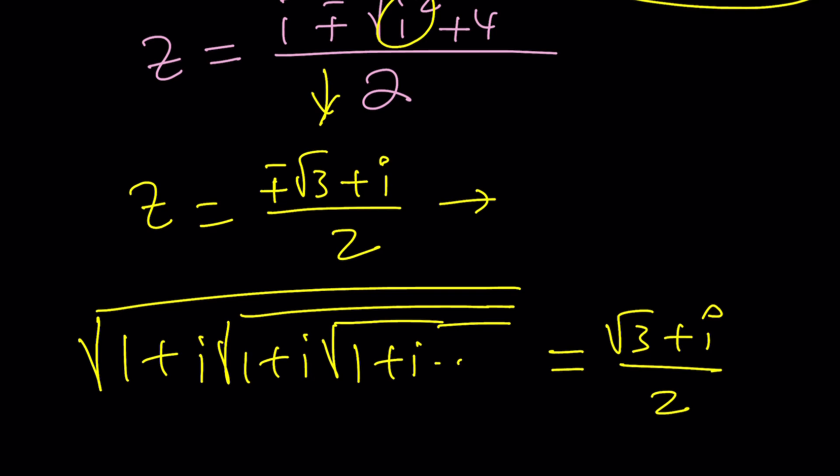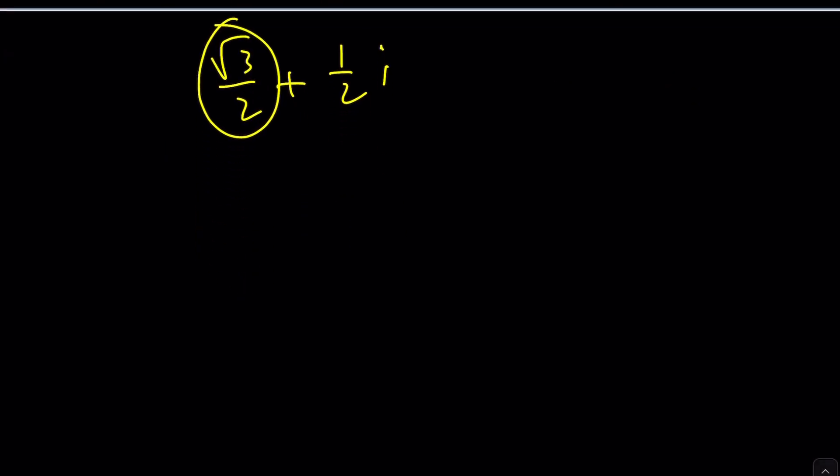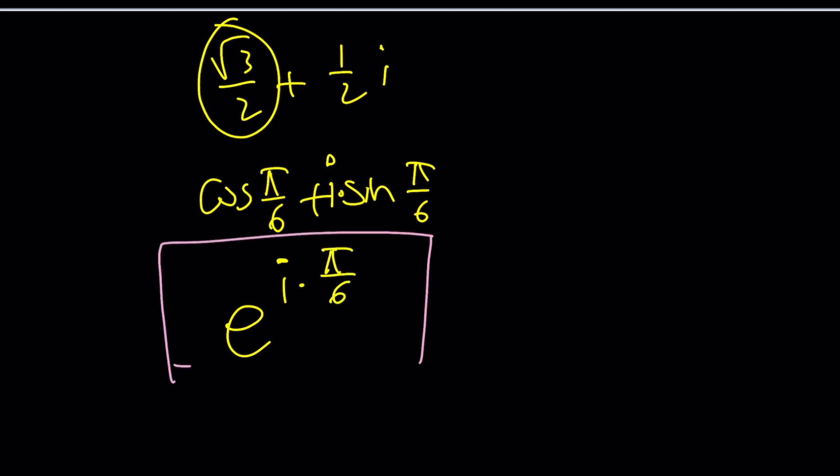We could write this in polar form as well. If you're interested, it's going to look like root 3 over 2 plus 1 half of i. And notice that this is the same as cosine pi over 6. And this is the sine pi over 6. And we multiply by i. So this can be written as e to the power i times pi over 6 as well. That seems to be the solution. But what do you think?